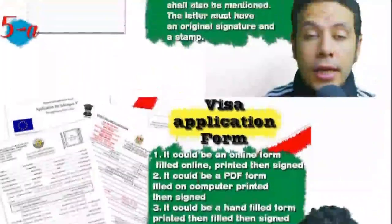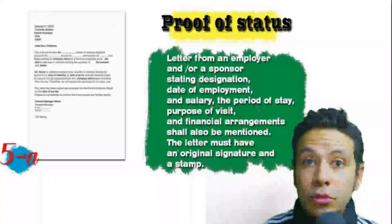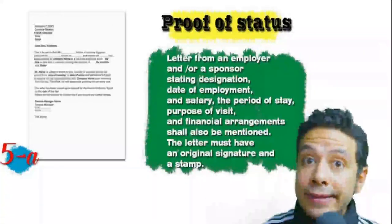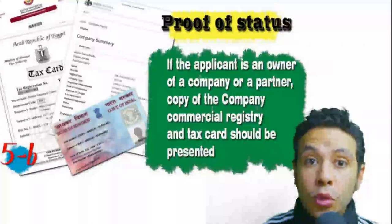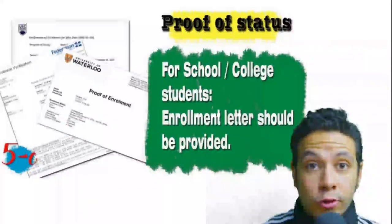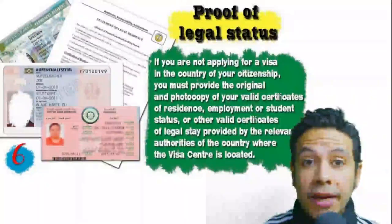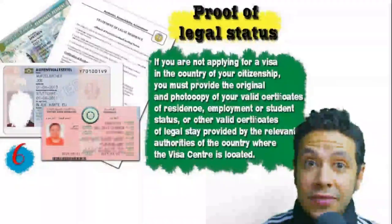In most visa application processes, you will be required to provide proof of status. If you are an employee, provide a letter from your employer or HR department mentioning your name, work details, salary, address, and contact numbers — with an original signature and stamp. If you own a business, your commercial registry and tax card must be presented. If you are a student, an enrollment letter from your university or school is needed.